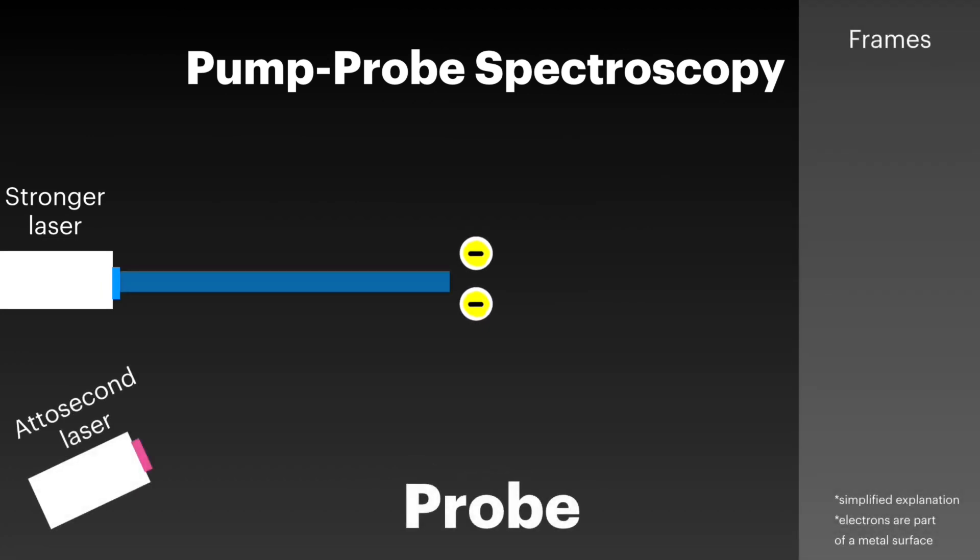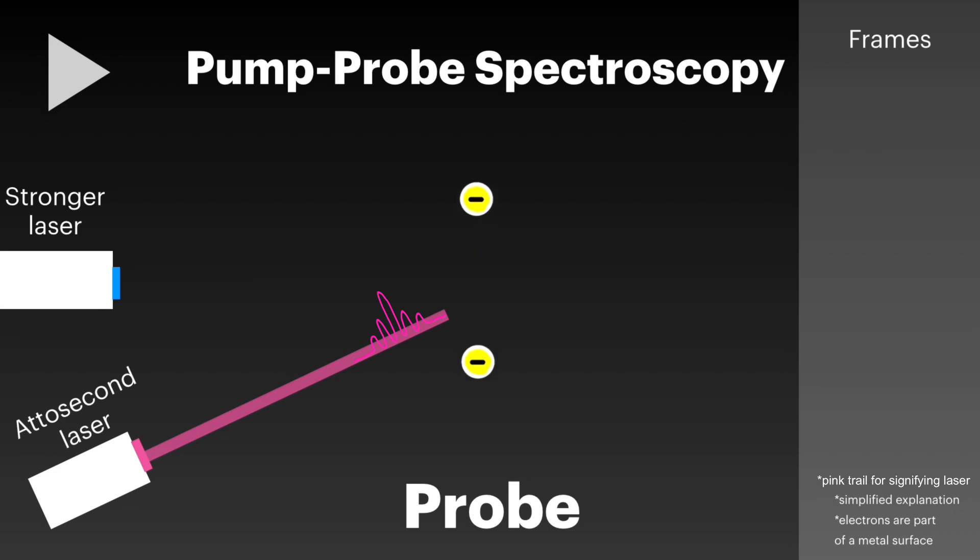The second part, the probe, is where the attosecond light bursts are shined via laser at the electrons. The information then obtained by the light is measured using complex techniques, and the information is used to determine the position of the electrons.